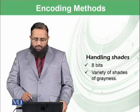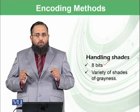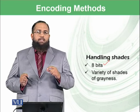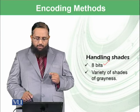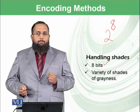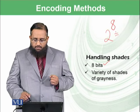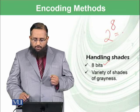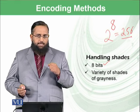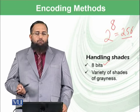For handling shades, we normally do not use one bit — we use eight bits. With eight bits you can represent shades. As we learned in the last module, with eight bits we can represent two raised to the power eight combinations, or unique bit patterns, which becomes 256. So 256 types of shades can be represented with eight bits, giving us a variety of shades in the form of grayness.